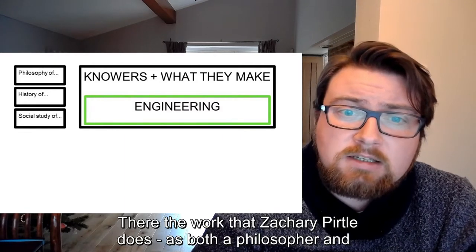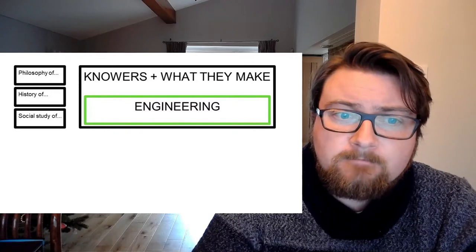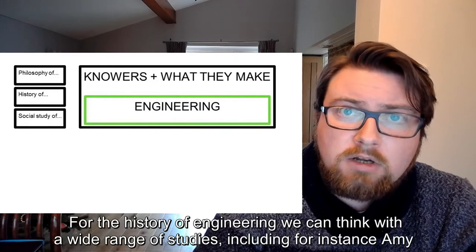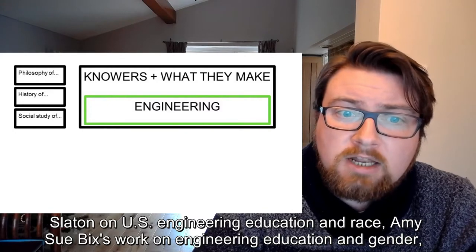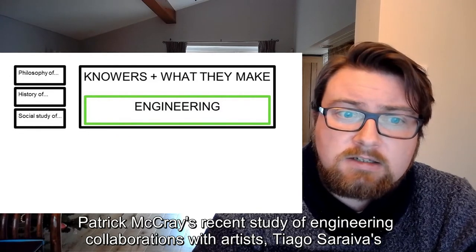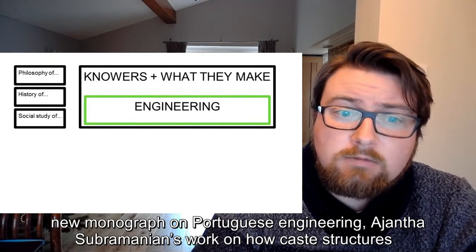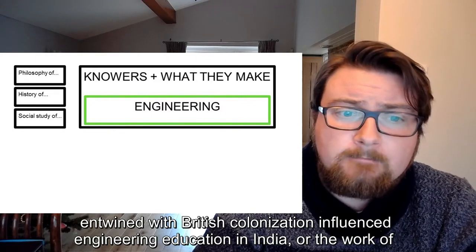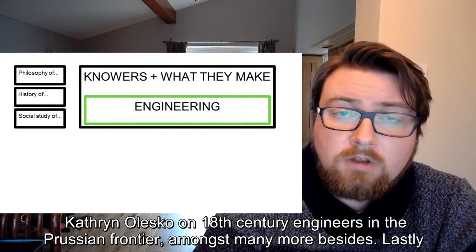There the work that Zachary Pirtle does, as both a philosopher and an engineer, is of great value to us all and could be developed far further. For the history of engineering, we can think with a wide range of studies, including Amy Slaton on US engineering education and race, Amy Sue Bix's work on engineering education and gender, Patrick McRae's recent study of engineering collaborations with artists, J.B. Sarjevic's new monograph on Portuguese engineering, Ajanta Sub-Romanian's work on how caste structures entwined with British colonisation influenced engineering education in India, or the work of Catherine Olesko on 18th century engineers in the Prussian frontier, amongst many more besides.